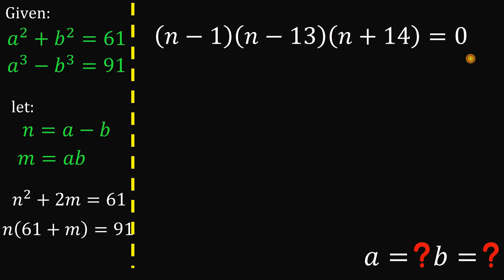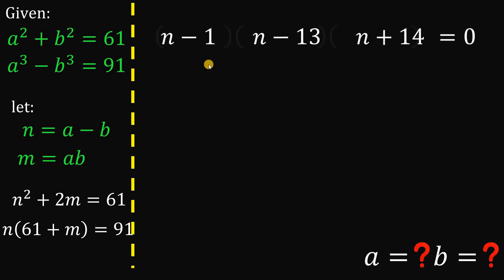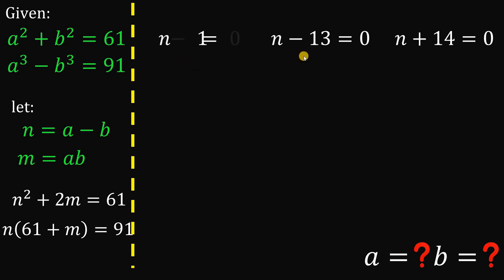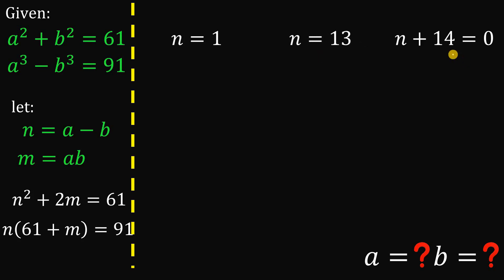Since the product equals zero, we apply the zero product property: n minus 1 equals 0, or n minus 13 equals 0, or n plus 14 equals 0. This gives us three cases: n equals 1, n equals 13, and n equals negative 14.